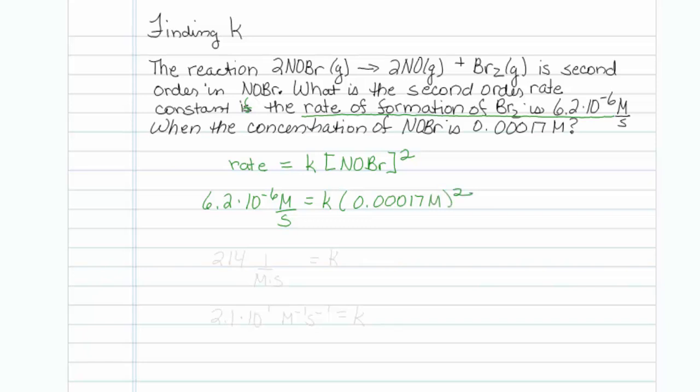So we just have to do the math. And we find out that K is equal to 214, and let's check our units. Looks like our units are 1 over molar per second. And just to be concerned about sig figs, I guess I should technically say it's 2.1 times 10 to the first, M to the minus 1 S to the minus 1, is equal to the rate constant.